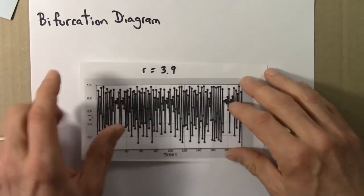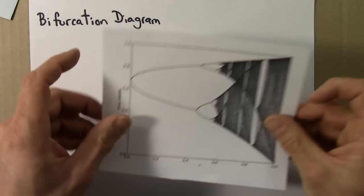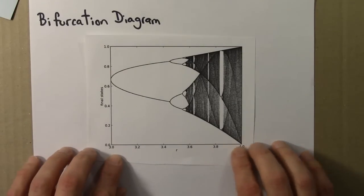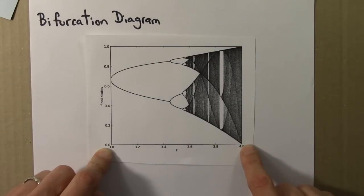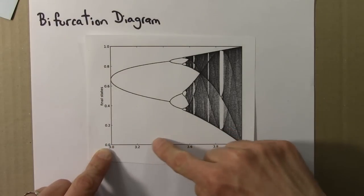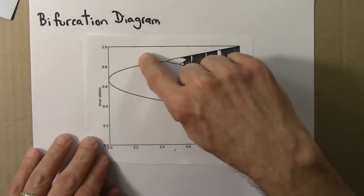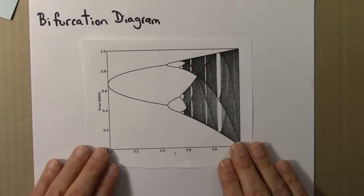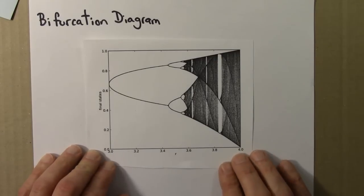And then lastly, we'll need to repeat this process for many different R values and put them all together to make a bifurcation diagram like this. And so we'll need to tell the program what R value to start at, what R value to end at, and how many intermediate R values to do the numerical experiment to make the final state diagram that then gets smushed together to become the bifurcation diagram. So let's take a look at the program and see how it works.